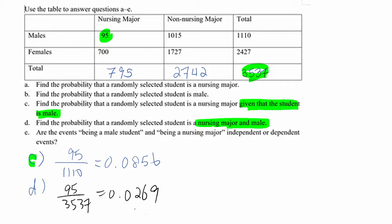Now E: are the events being a male student and being a nursing major independent or dependent? That's actually the main problem. You have two different possibilities here, but this time I'm going to let you know the product rule. The reason is we have the D answer, so one condition to check independent events...